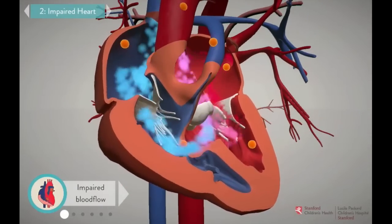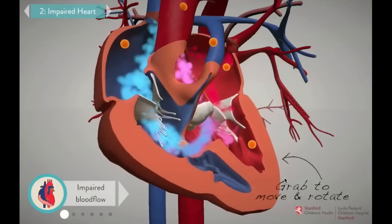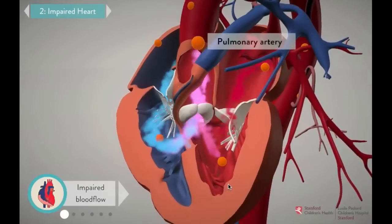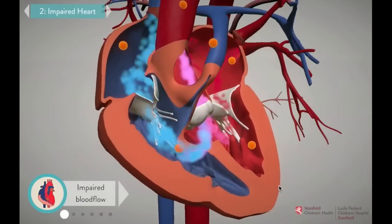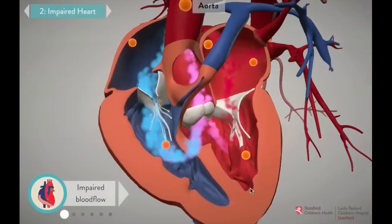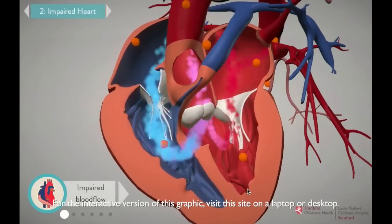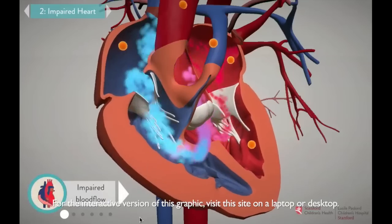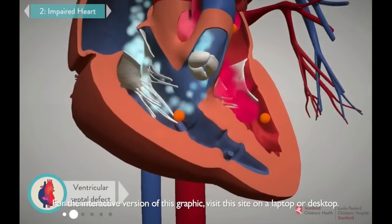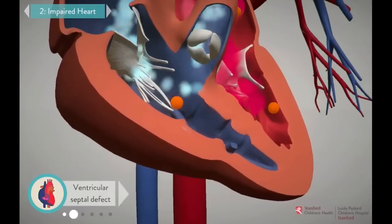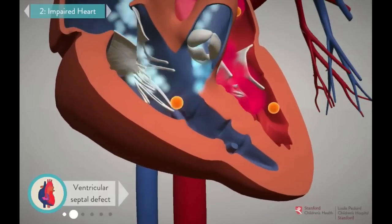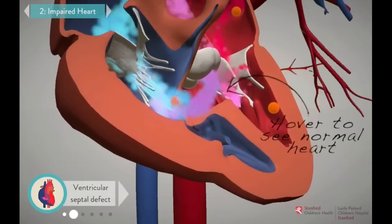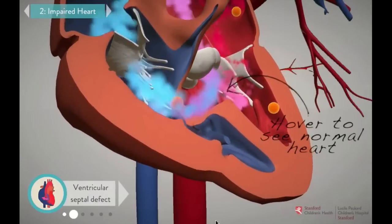In Tetralogy of Fallot with pulmonary atresia, the paths that the blood normally travels to get oxygen have gotten scrambled during fetal development, and blood has to take a different pathway to reach the lungs. In Tetralogy patients, the muscle wall that separates the two sides of the heart doesn't form properly, which leaves a hole between the ventricles. We call that a ventricular septal defect, or VSD.